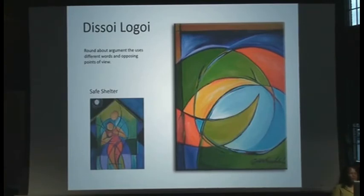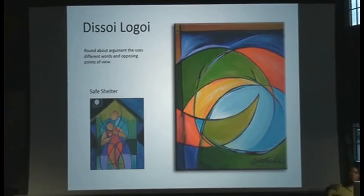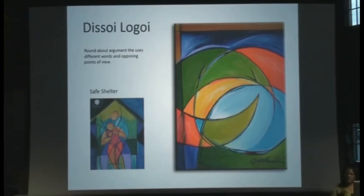And then this is dissoi logoi. It's a roundabout argument using different points of view. It's the kind of argument that sometimes you'll get in relationships — 'I see it this way, and you see it that way.' So there's more of a clashing to it, and that's how the art came out — as a clash of an image.